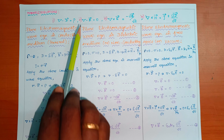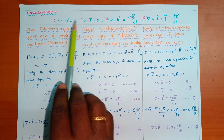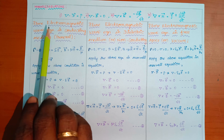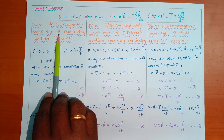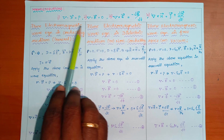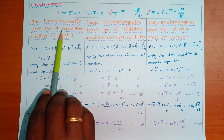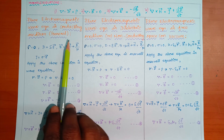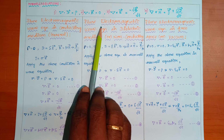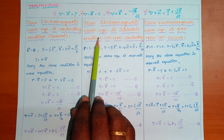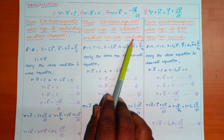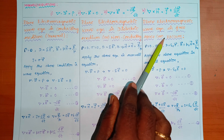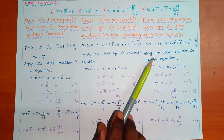Now, there are three types of electromagnetic wave equations. The first is the plane electromagnetic wave equation in conducting medium. The second is the plane electromagnetic wave in dielectric medium or non-conducting medium. The third is the plane electromagnetic wave in free space or vacuum. These are the three equations we will derive.